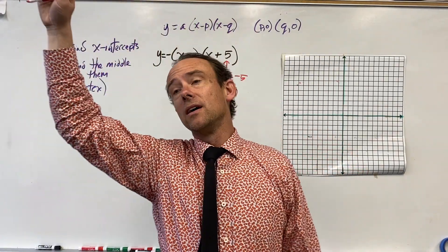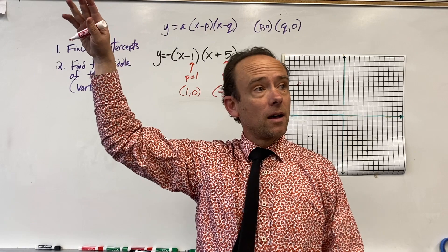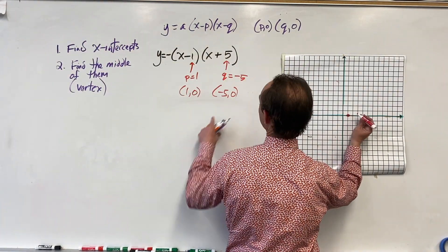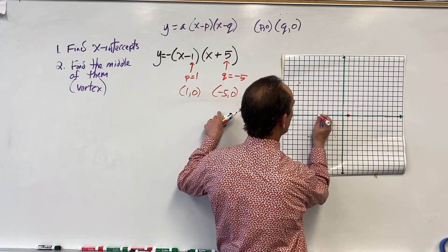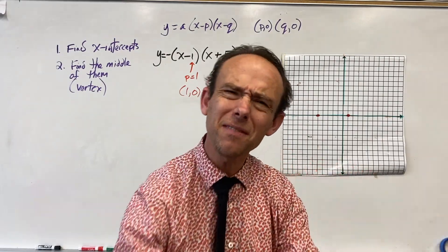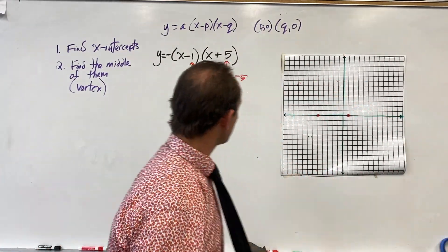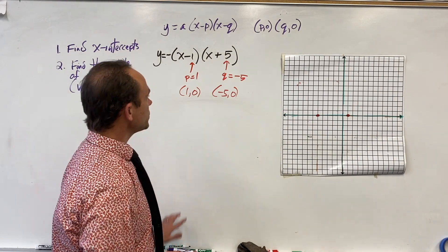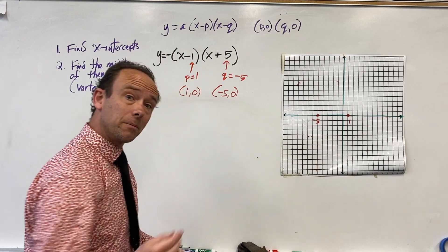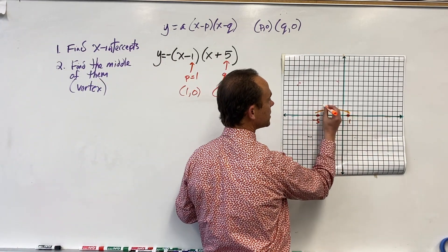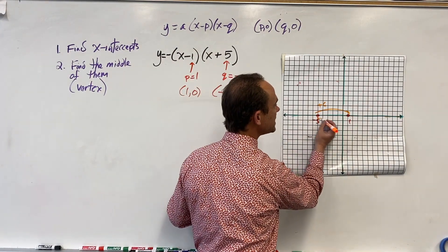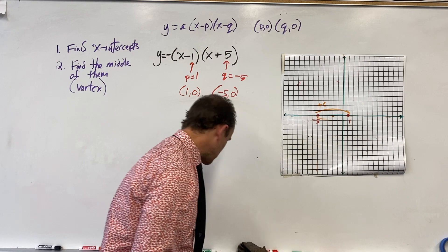We now know where our x-intercepts are. Thank you intercept form for being so beautiful, what a wonderful form! Big round of applause for intercept form. We got our points: (-5, 0) and (1, 0). Now we got to find the middle of these to get to our vertex.